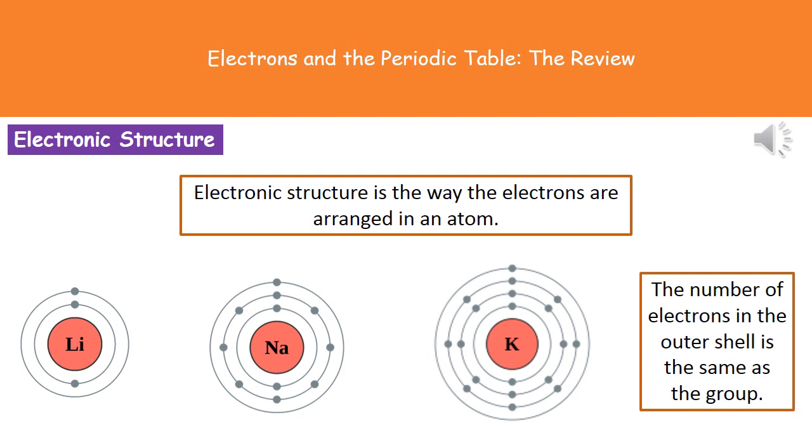So what we can actually say is that the number of electrons present in the outer shell of a particular atom tells you the group number as well. So if it's got one electron in its outer shell, it's in group 1. If it has six electrons in its outer shell, it will be in group 6.